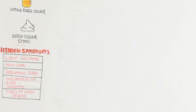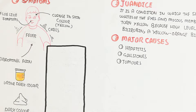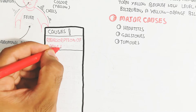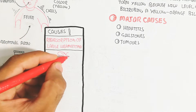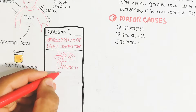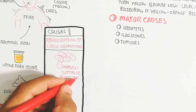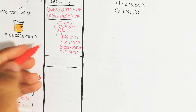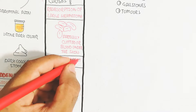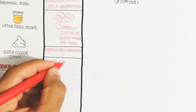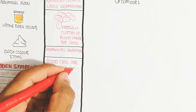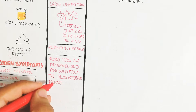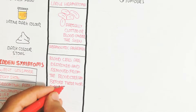Now let's discuss the major causes. Reabsorption of a large hematoma — a partially clotted blood mass under the skin due to injury — leads to absorption because red blood cells convert into globin, heme, and biliverdin. Hemolytic anemia is also a cause, where blood cells are destroyed before their normal lifespan, producing biliverdin through breakdown.